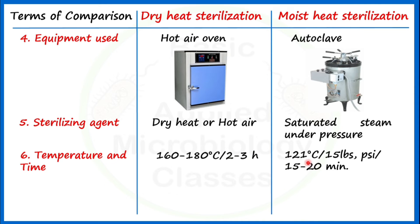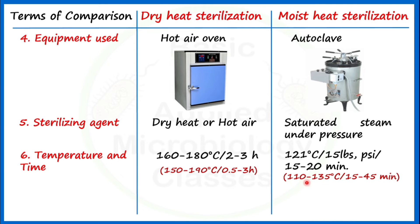In certain books, the temperature range for a hot air oven may be given as 150 to 190 degrees Celsius for 30 minutes to 3 hours, and for the autoclave as 110 to 135 degrees Celsius or more for 15 to 45 minutes. This variation is acceptable because it depends on the kind of material being sterilized. Generally, the first range is preferred and used in microbiology laboratories.